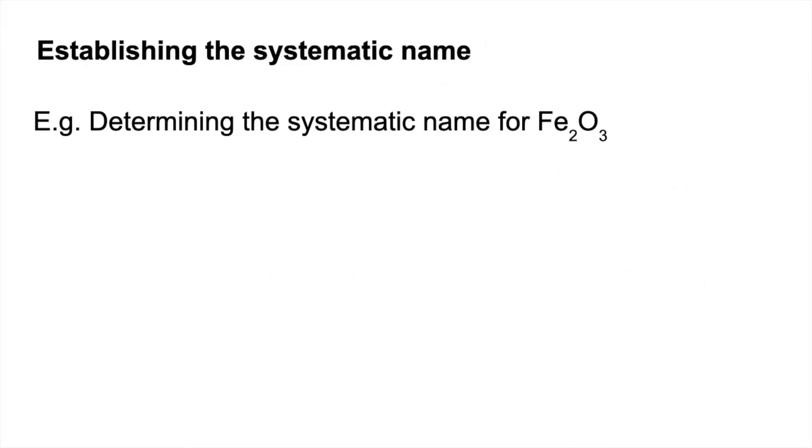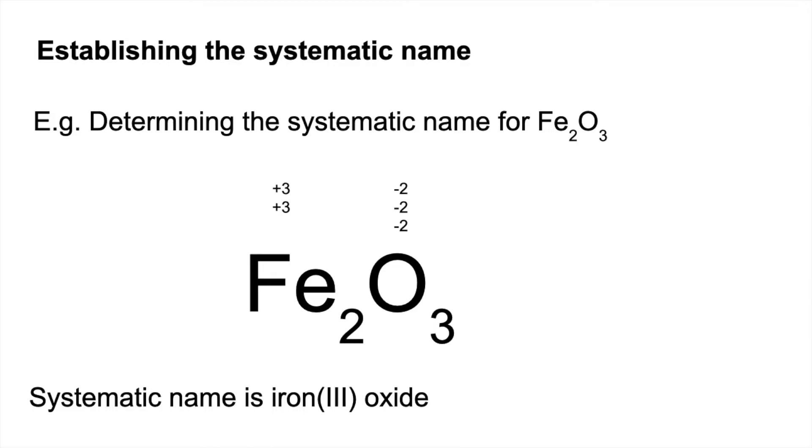I'll do one worked example and then I've got some for you to try. So we're going to determine the systematic name for this oxide of iron, Fe2O3. I'm just going to put the formula up again and establish the oxidation numbers of the atoms in the compound. Those three oxygens have a minus two oxidation number each. So to leave no charge we need the two irons to be putting in plus six, so each one must be plus three. Therefore this oxide has a systematic name of iron(III) oxide.